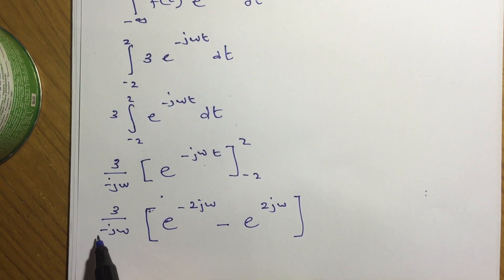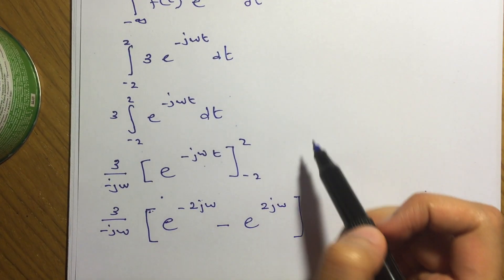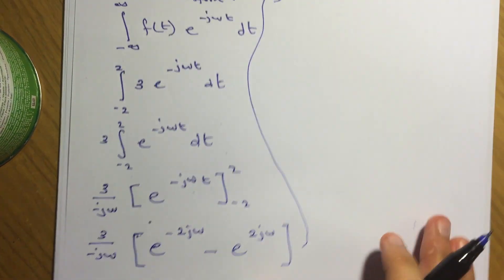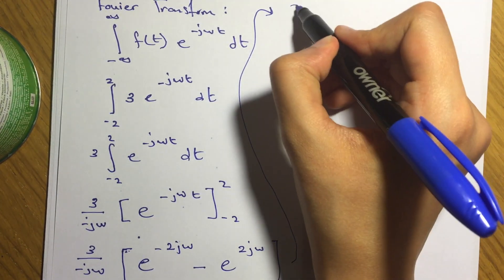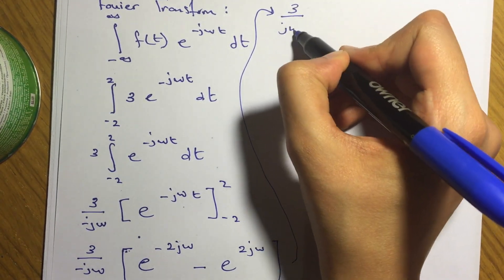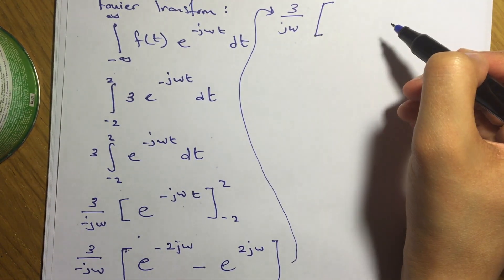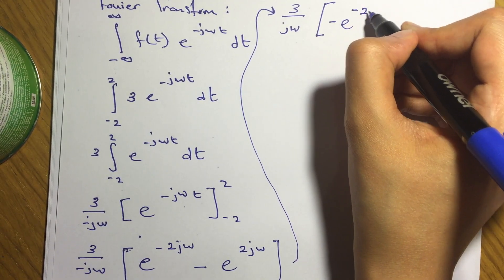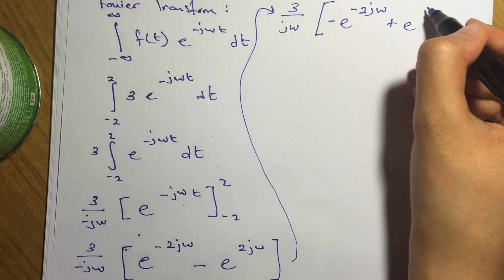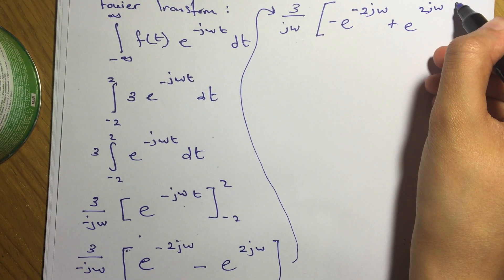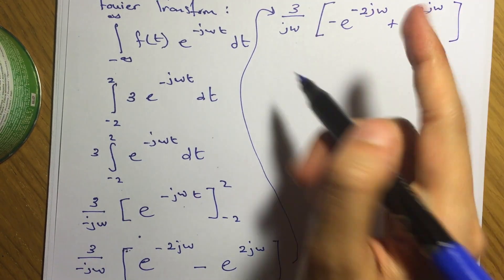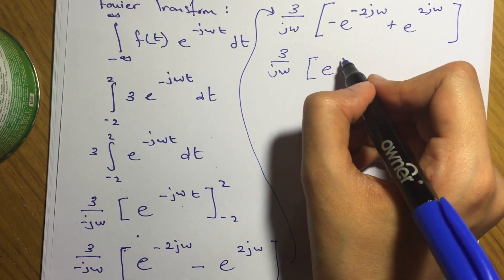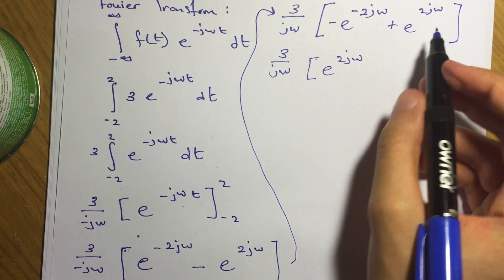Okay, we have a negative outside here, so we can distribute it inside. So it will give us 3 over j omega times negative e to the 2j omega plus e to the negative 2j omega. So if we just rearrange this, 3 over j omega times e to the negative 2j omega minus e to the 2j omega.